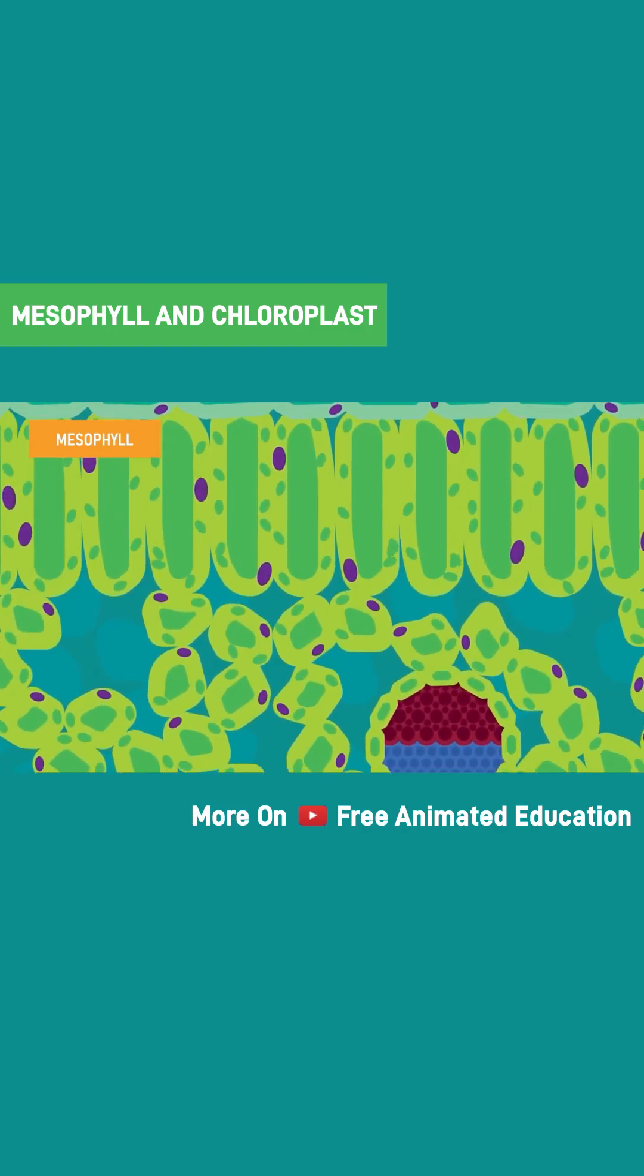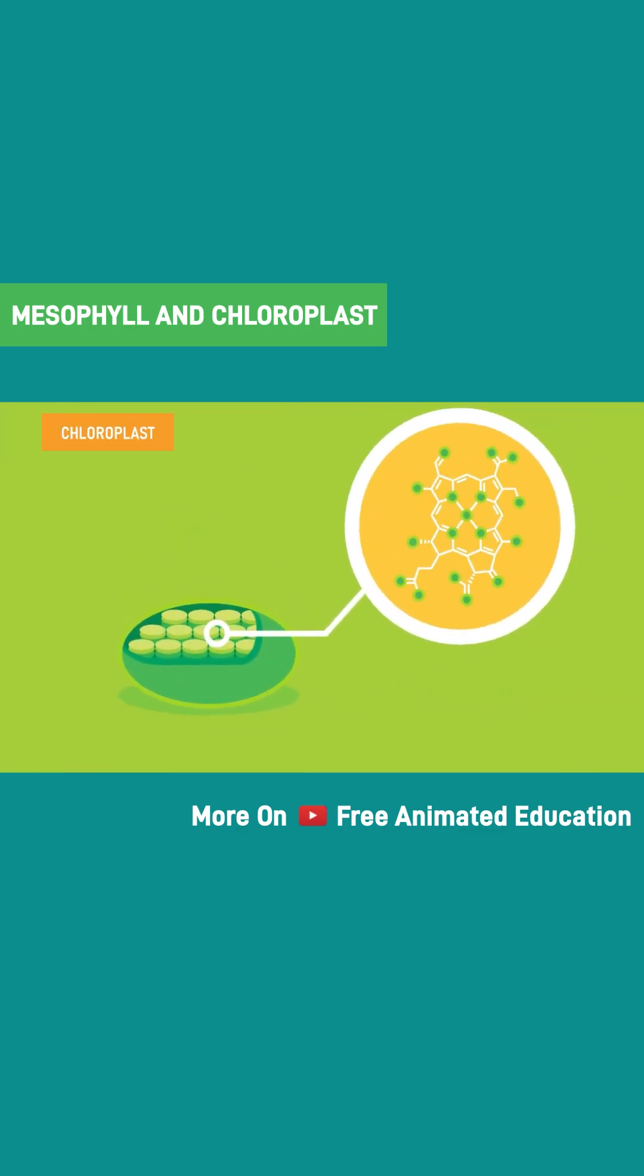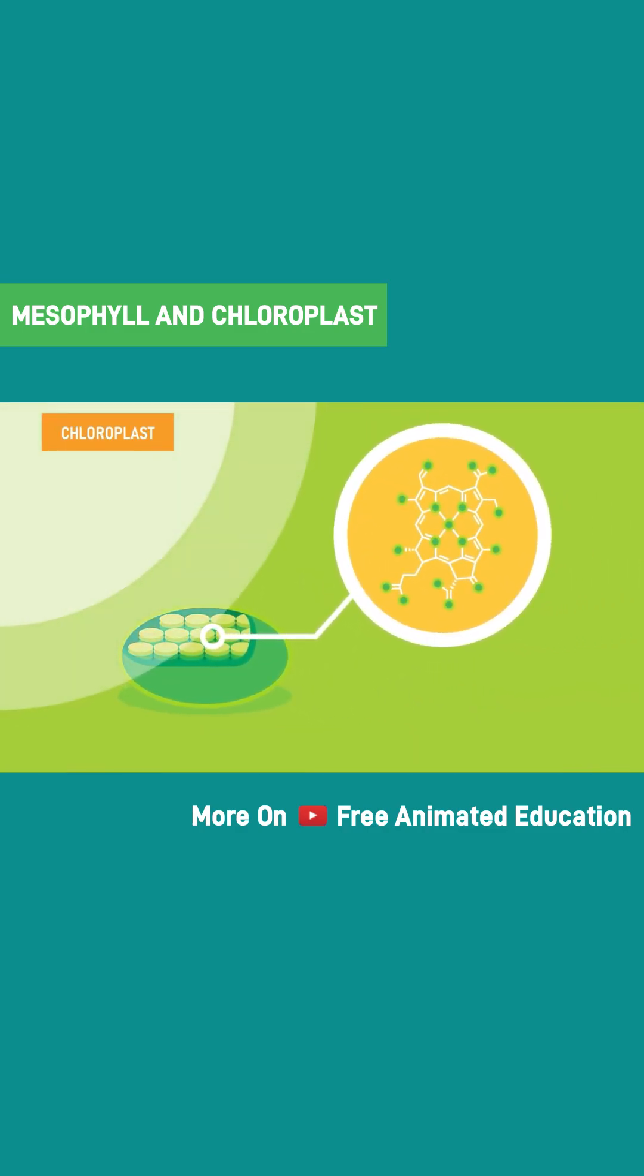In both layers of mesophyll, many chloroplasts are present. Chloroplasts contain chlorophyll pigment that captures energy required for photosynthesis to happen.